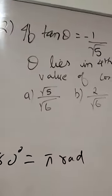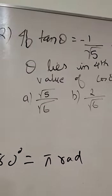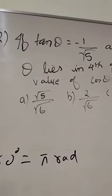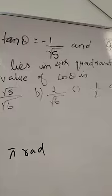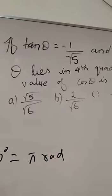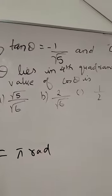We are given that tan θ is equal to minus 1 upon 5, and θ lies in the 4th quadrant. We need to find the value of cos θ. This is our quadrant system.